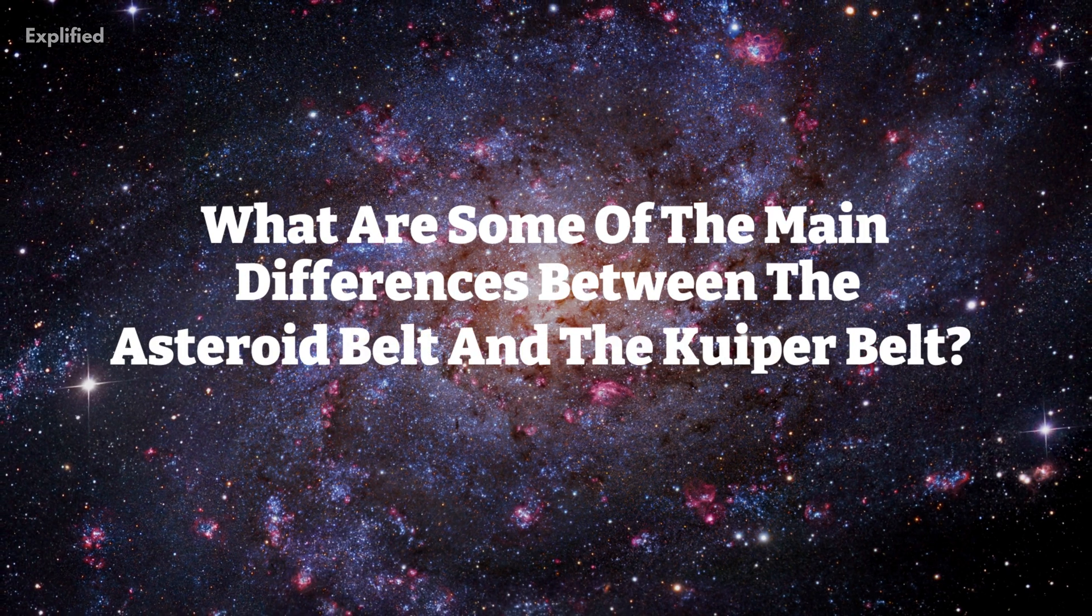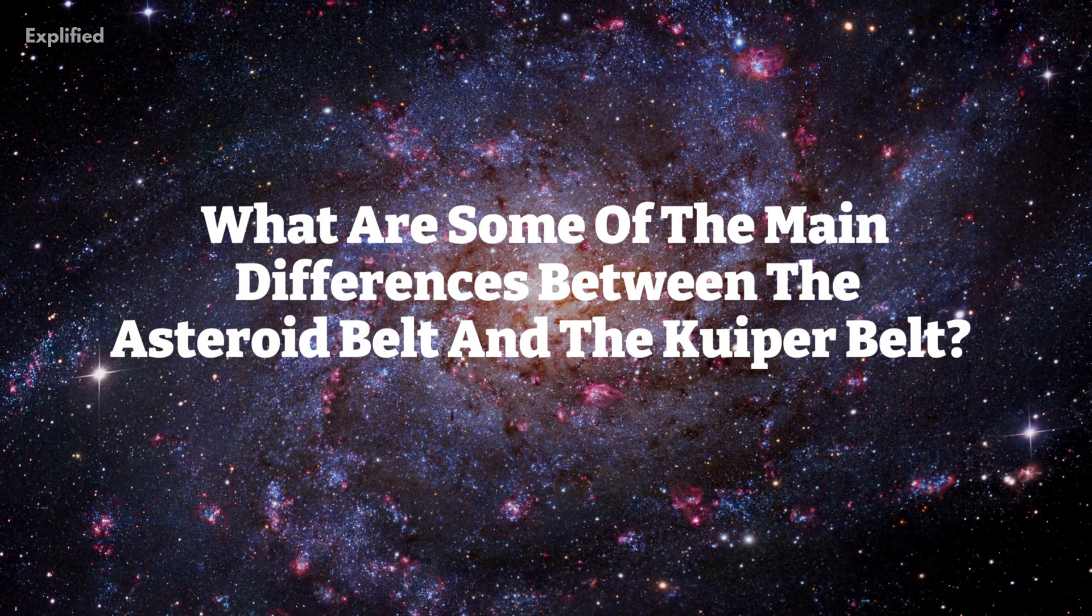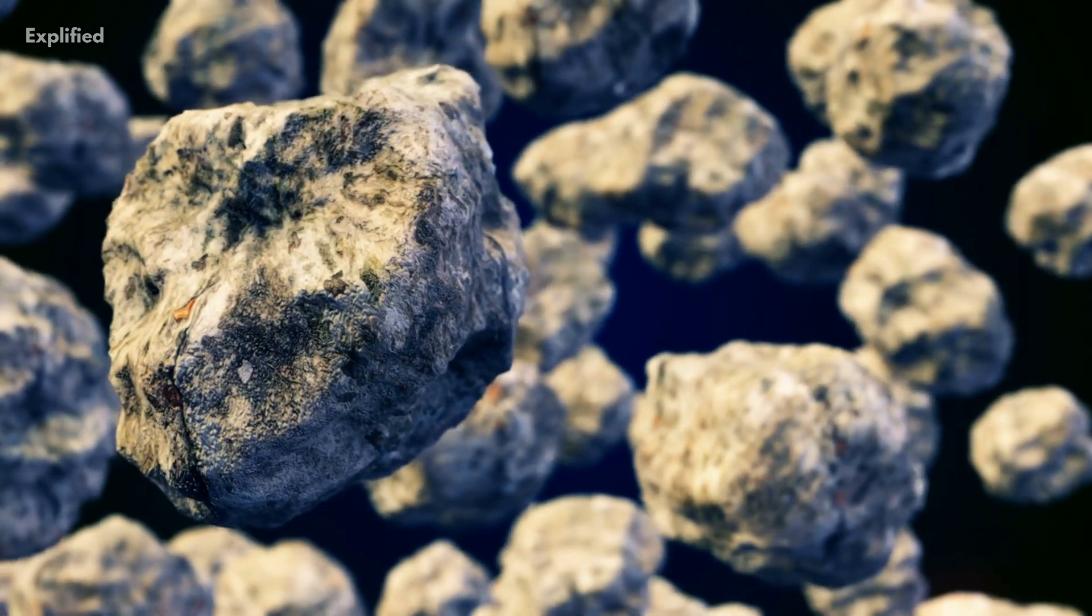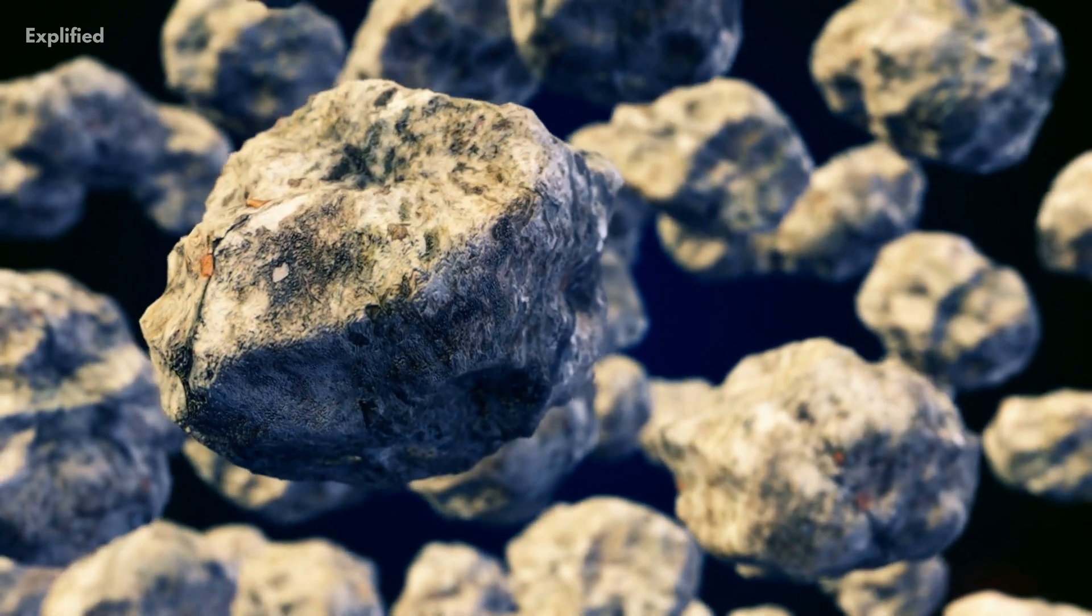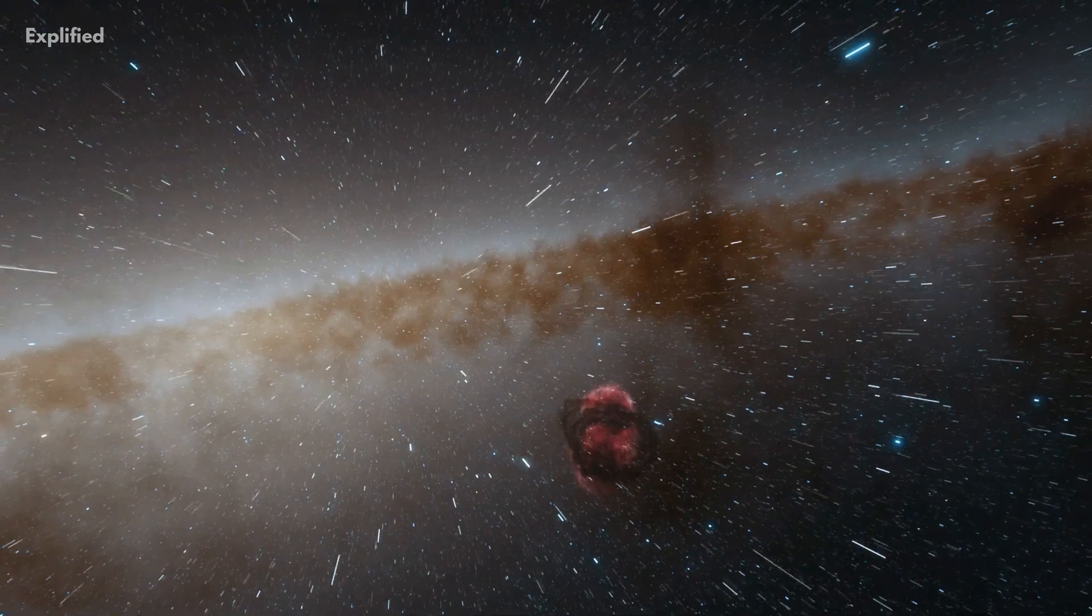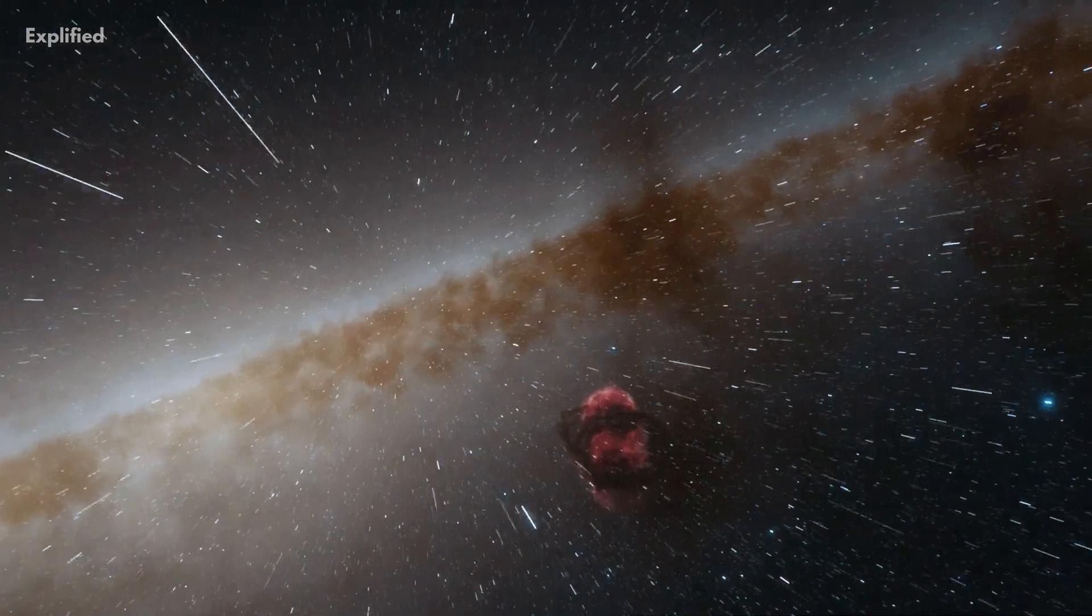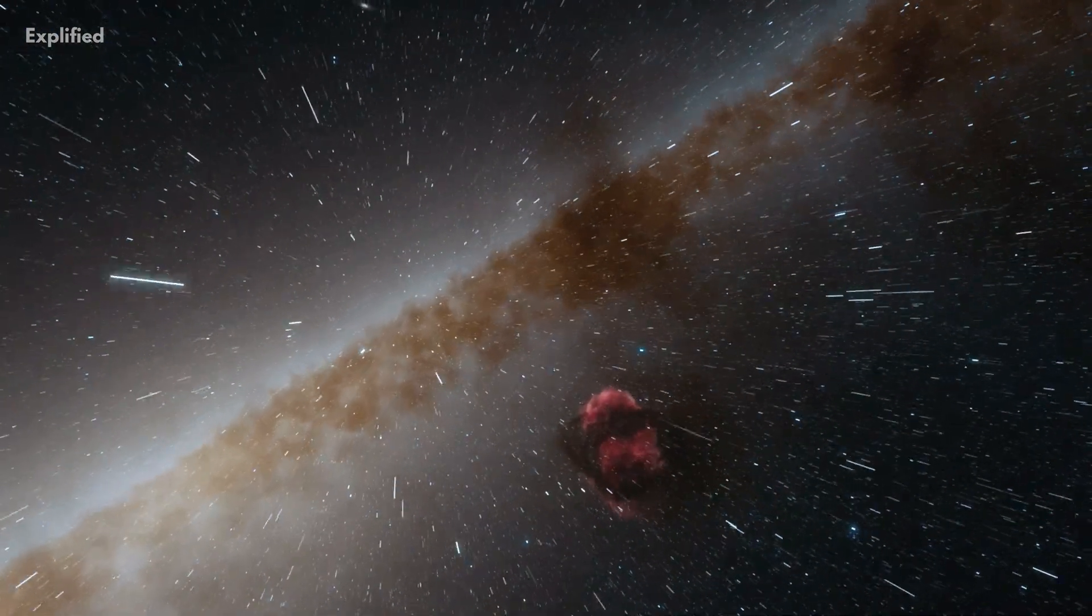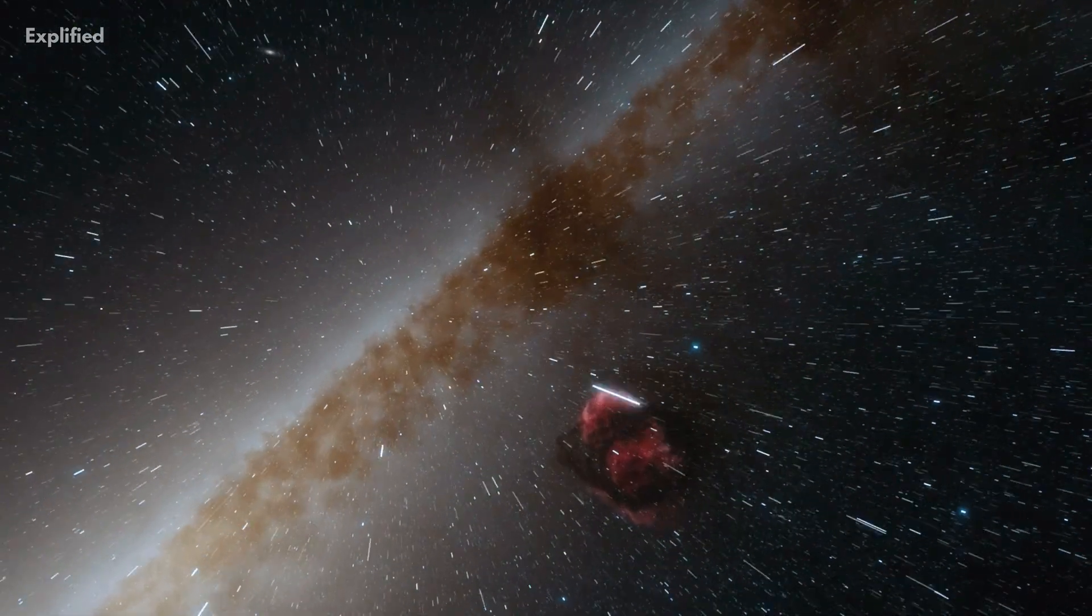What are some of the main differences between the asteroid belt and the Kuiper belt? The main difference between the Kuiper belt and the asteroid belt is that the Kuiper belt is much larger in size and more massive, and the objects in the Kuiper belt are composed largely of various ices compared to the silicates, rocks, and metals of the asteroid belt.